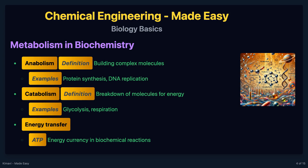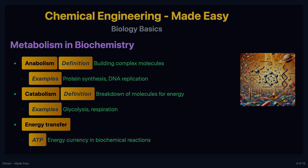Metabolism includes anabolism, which builds complex molecules like proteins and DNA, and catabolism, where molecules like glucose are broken down to release energy. ATP, or adenosine triphosphate, plays a key role in transferring energy within cells.